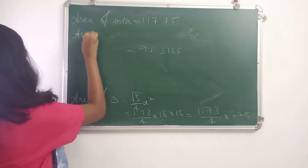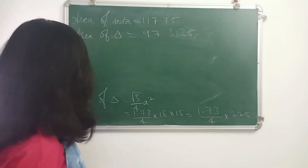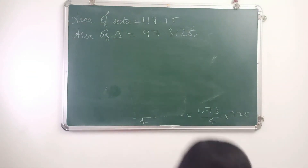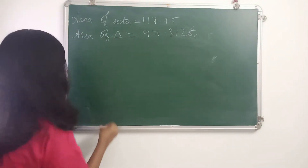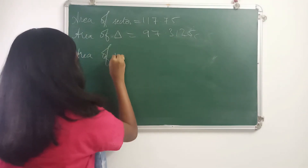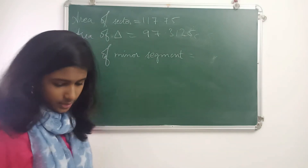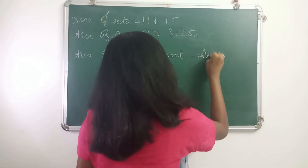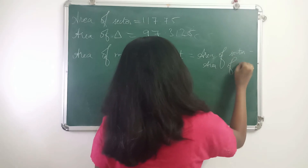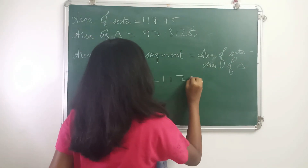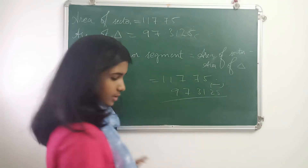Now coming to the area of the minor segment. Area of minor segment is equal to area of sector minus area of triangle. So that is 117.75 minus 97.3125.